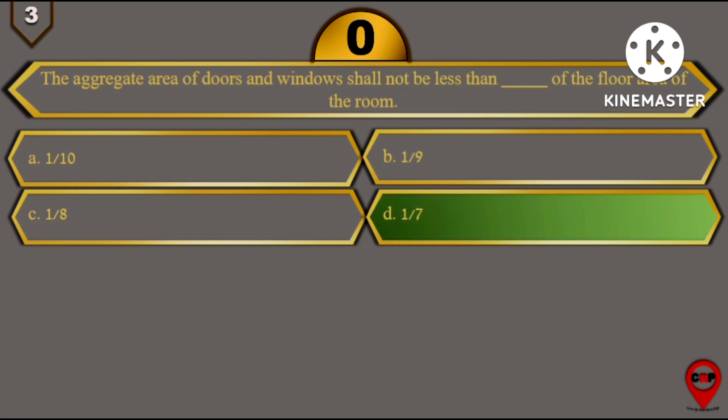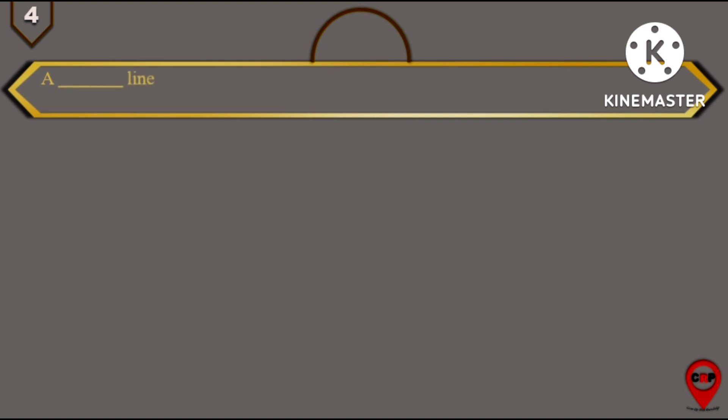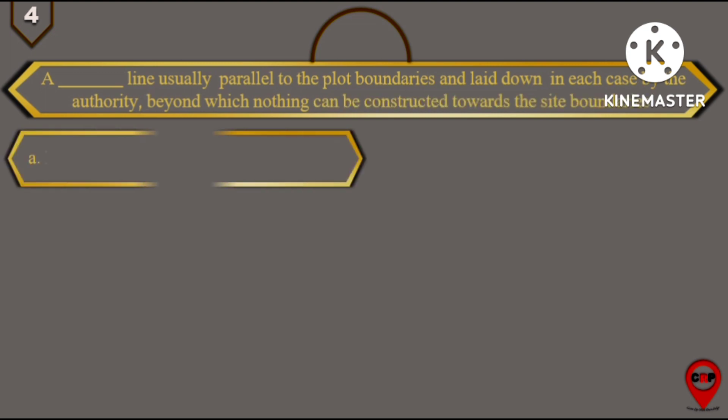Next question, question number 4: A dashed line usually parallel to the plot boundaries and laid down in each case by the authority beyond which nothing can be constructed towards the side boundaries. Options are: building line, control line, property line, and option D is plot line.